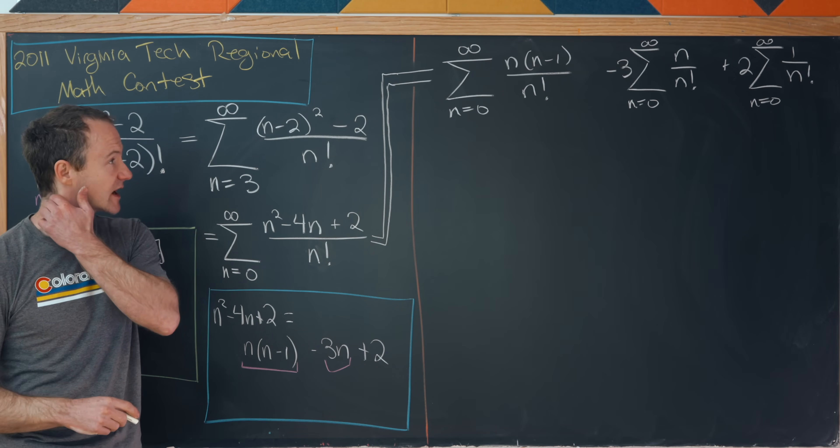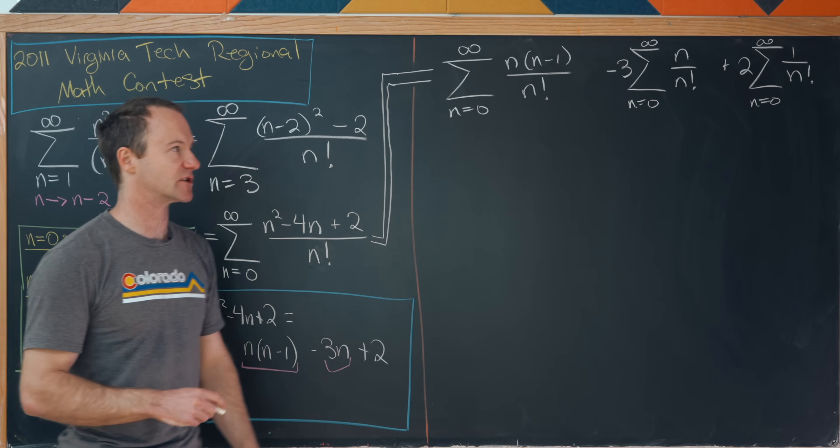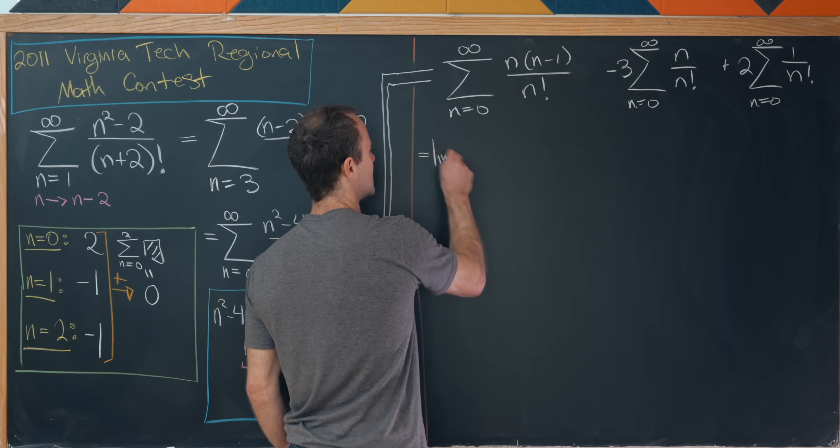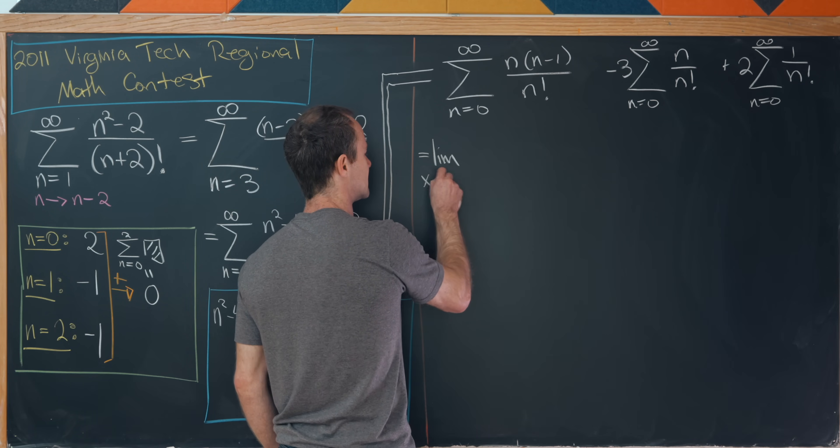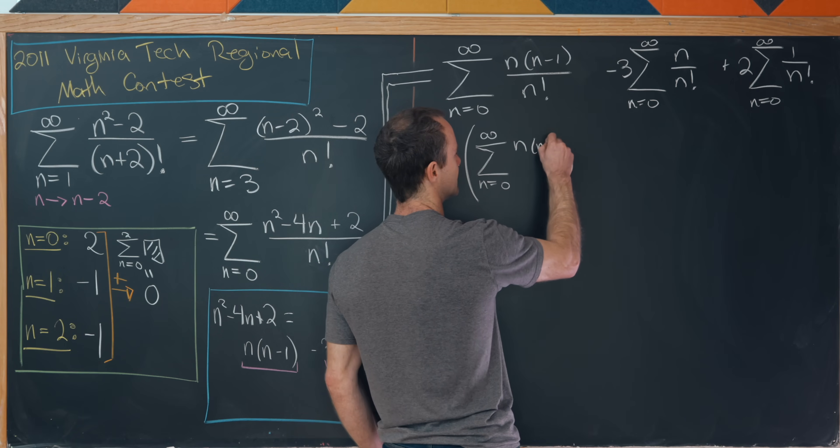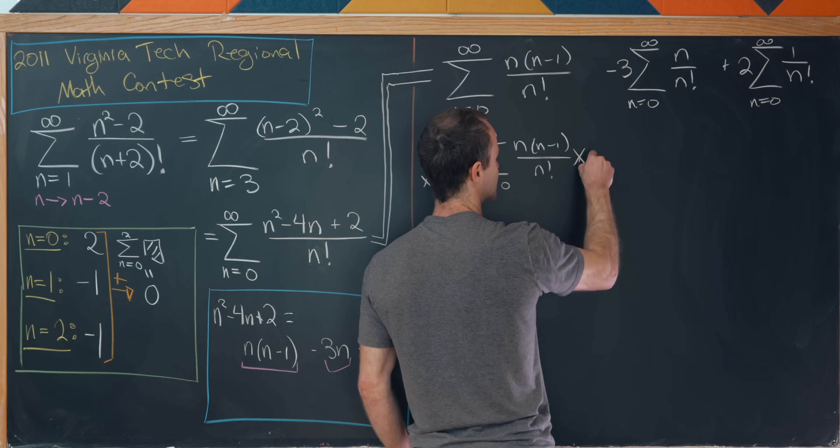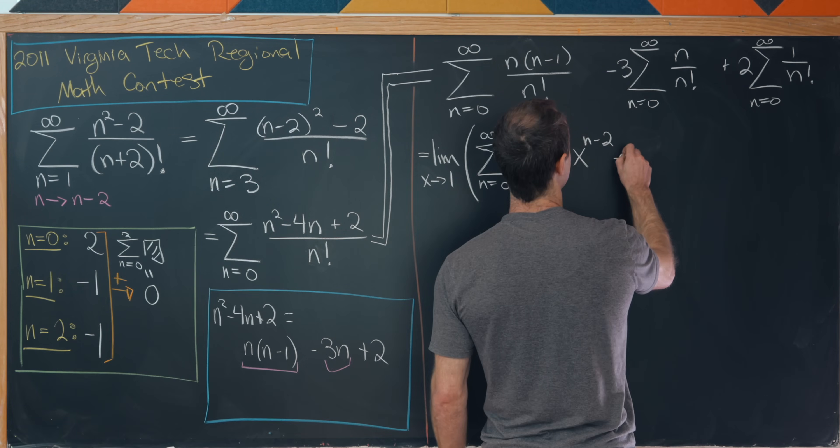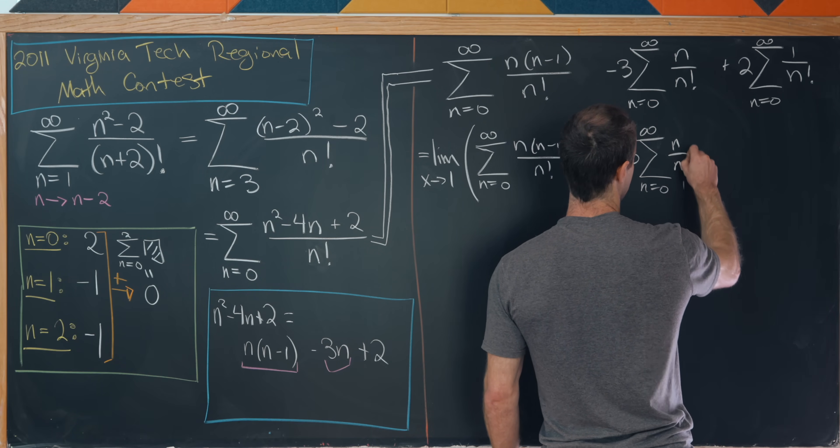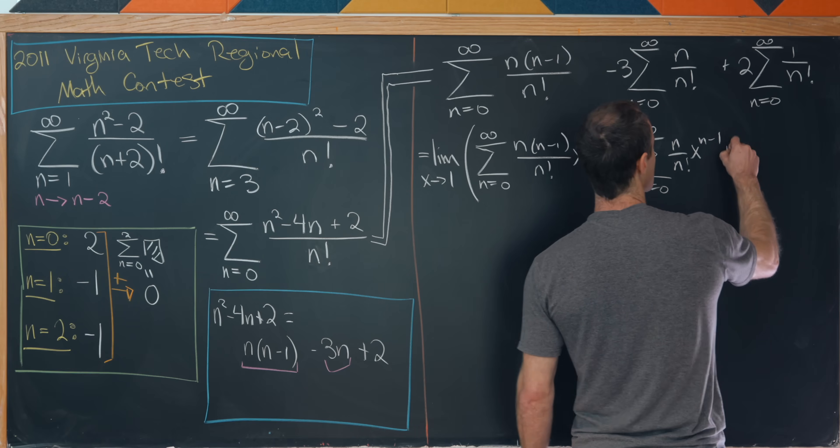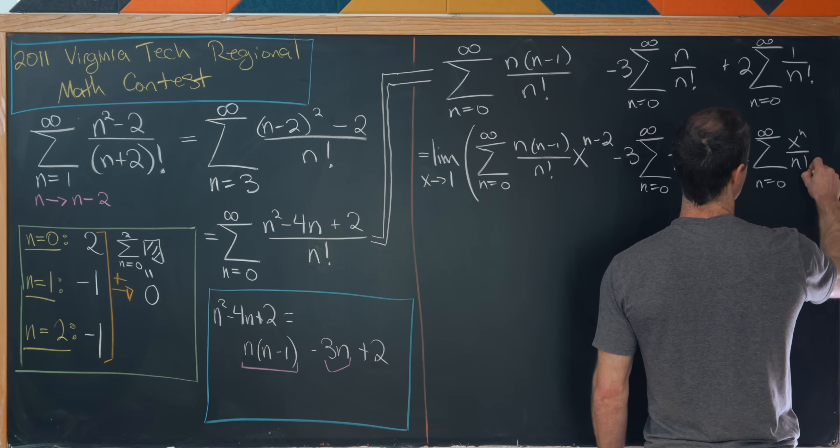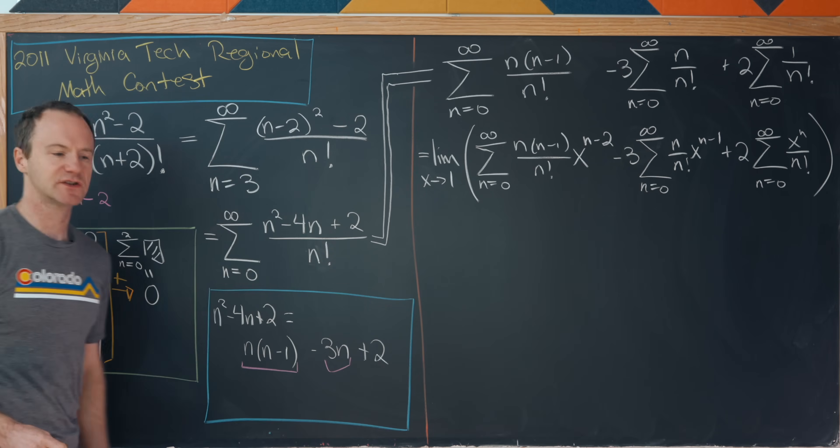But now here comes the major trick, and that is to write each of those as power series that have been evaluated at x equals one. And I'm going to do that by rewriting it as a limit, which is okay in this case. So this is equal to the limit as x equals one of, now I'll take this first one and rewrite it as the sum as n goes from zero to infinity of n times n minus one over n factorial times x to the n minus two, and then minus three times the sum as n goes from zero to infinity of n over n factorial times x to the n minus one, and then finally plus two times the sum as n goes from zero to infinity of x to the n over n factorial. So something like that.